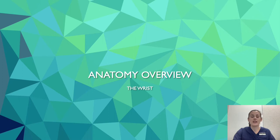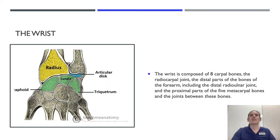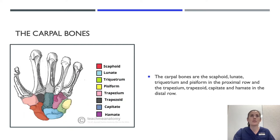A quick anatomy overview of the wrist: the wrist is composed of eight carpal bones, the radiocarpal joint, the distal parts of the bones of the forearm including the distal radioulnar joint, and the proximal parts of the five metacarpal bones and the joints between those bones. The carpal bones of the scaphoid, lunate, triquetrum, and pisiform form the proximal row, and the trapezium, trapezoid, capitate, and hamate form the distal row.